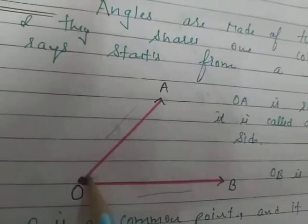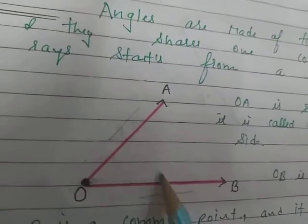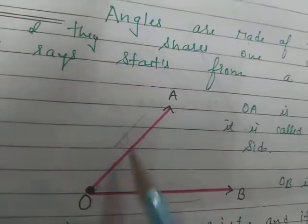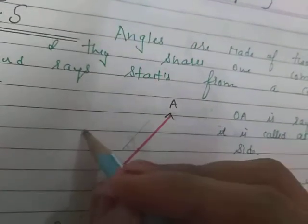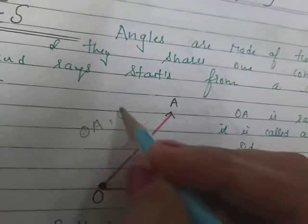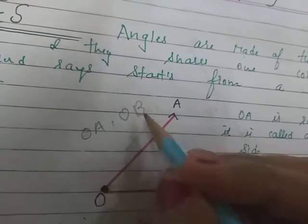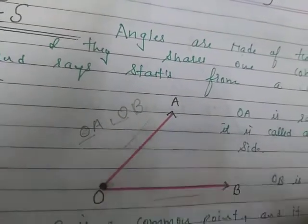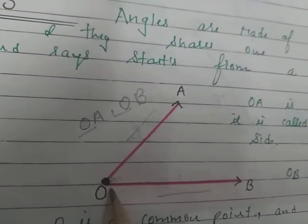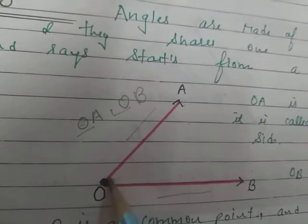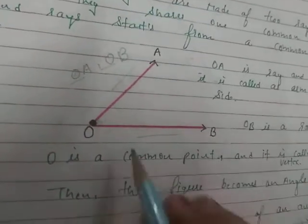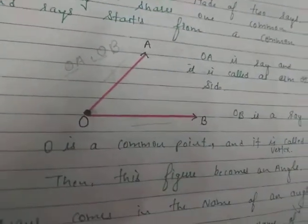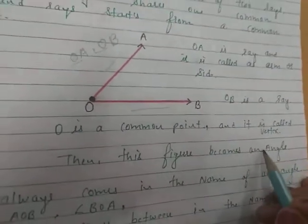In this figure we have two arms which are OA and OB. Whenever we write OA and OB, O is the common point. There are two rays, OA and OB, and O is the common point which is also called the vertex. So this figure becomes an angle.